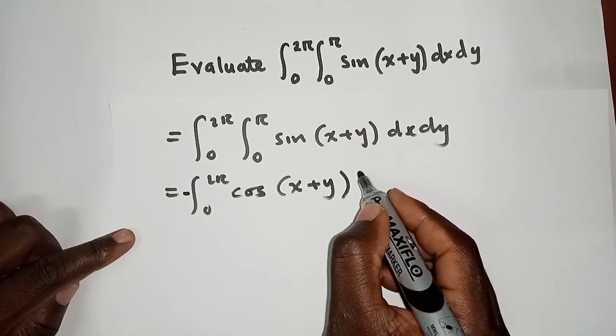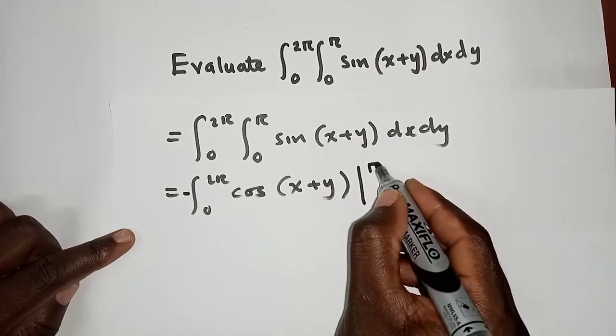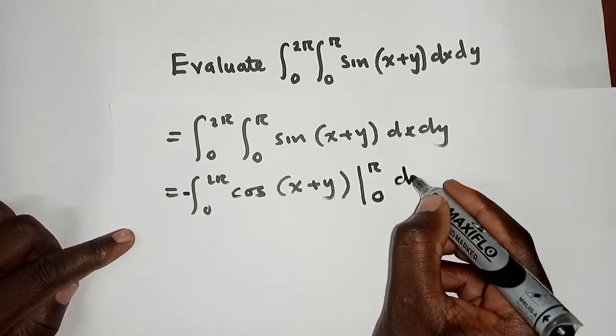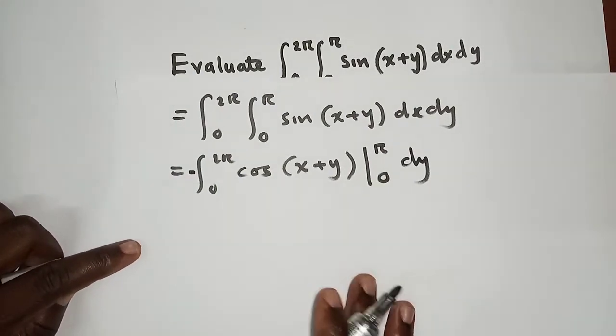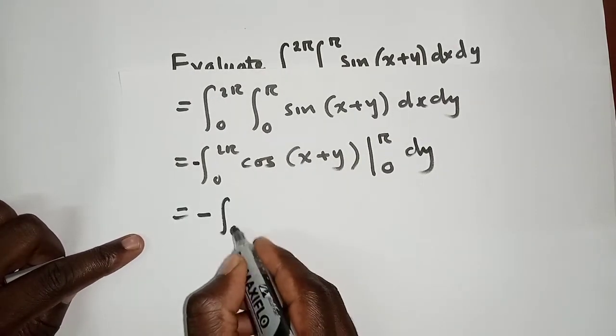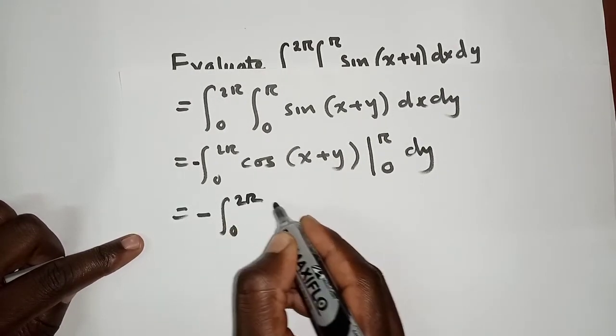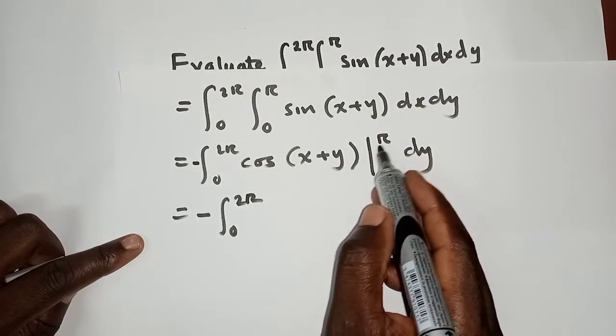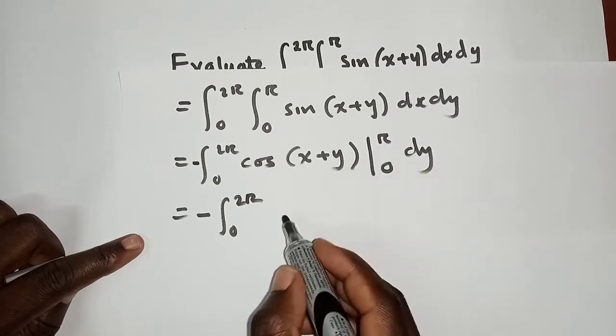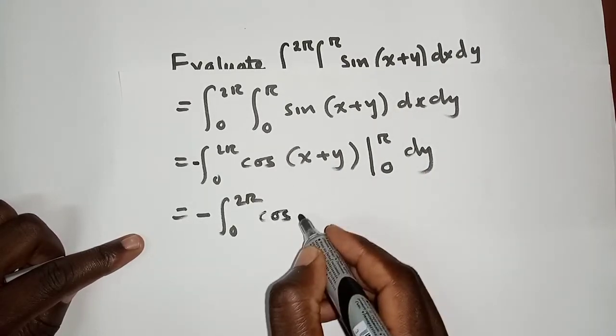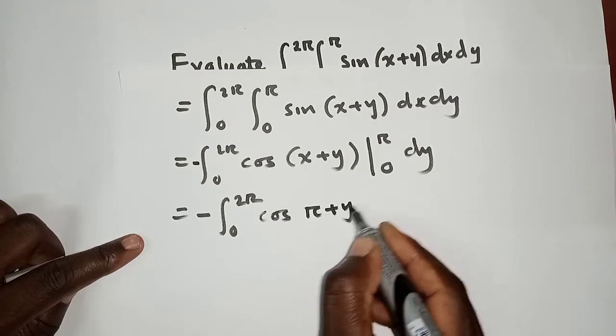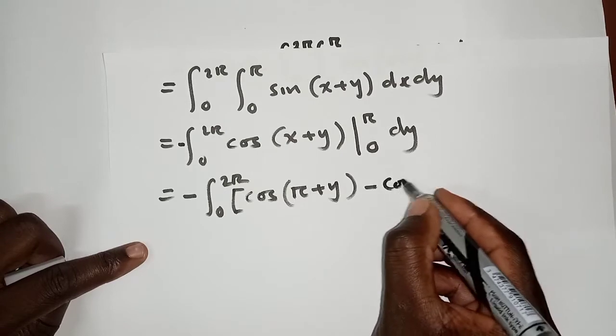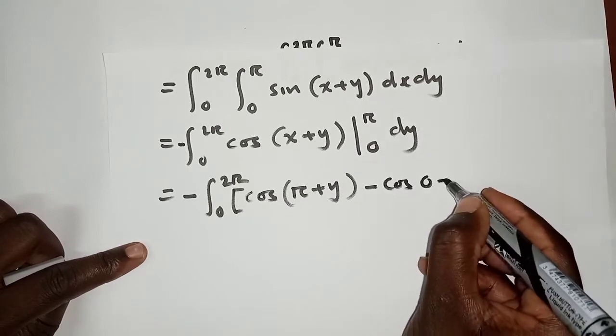The next thing would be to replace the x because we are integrating with respect to x. We replace it with pi, so we have cosine of (pi+y) here, minus cosine of (0+y) here.